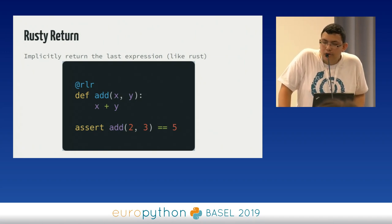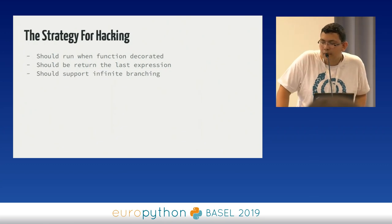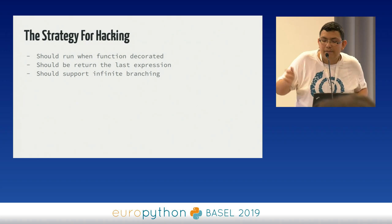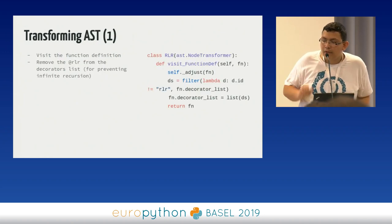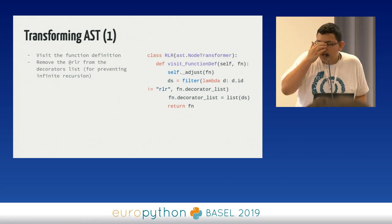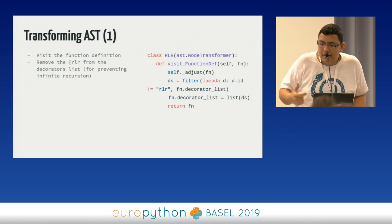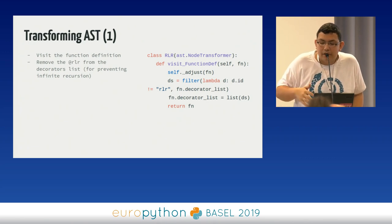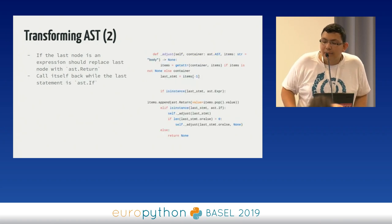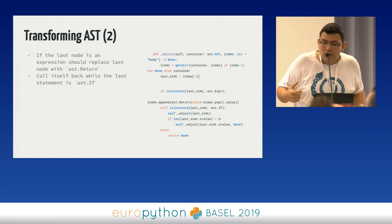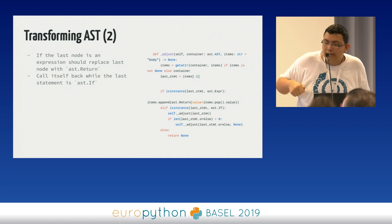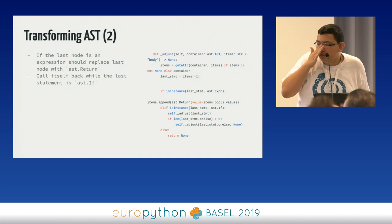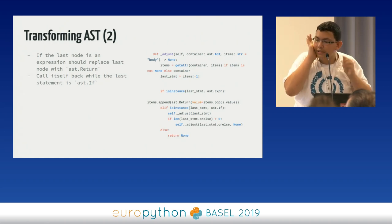Another funny hack is Rusty return. We need two things: return the last expression, and allow infinite branching — like if-else inside if-else — returning all possible last expressions. The AST transform goes through every function definition and checks for an RLR decorator. If there is one, we remove the decorator and call the adjust method. The adjust method finds the last statement of a function, and if it's an expression, it pops that statement and returns it as an AST return node. If it's an if statement, it recursively adjusts the if's body — this is how we support infinite branching.